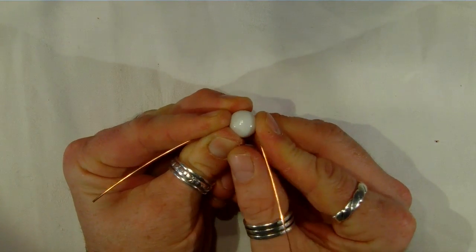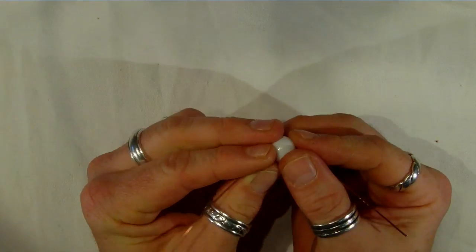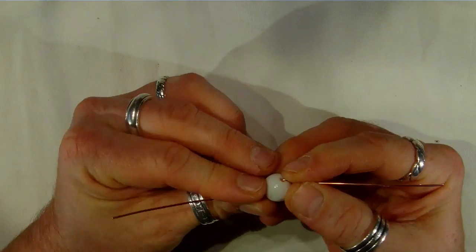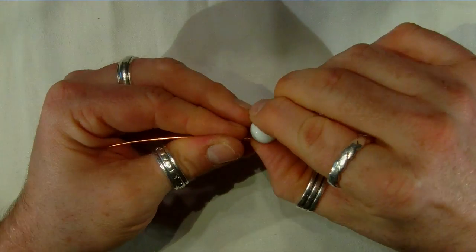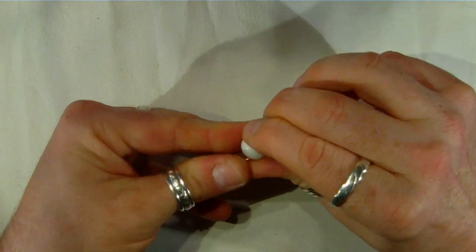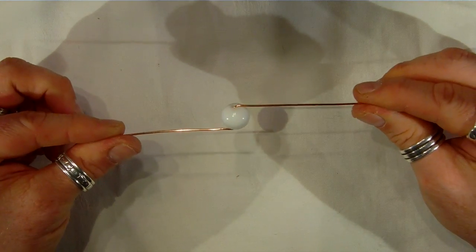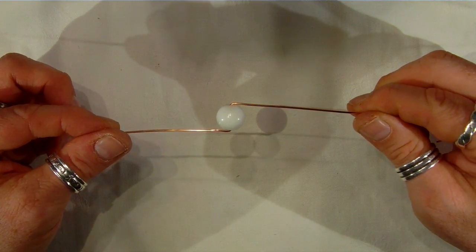Fold the wire down one side, nice and tight to the bead, and do the same on the other side. We don't want any neck to this wire or wire wrap eye loop because we want to make a bead cap. So nice and tight to the wire like so.